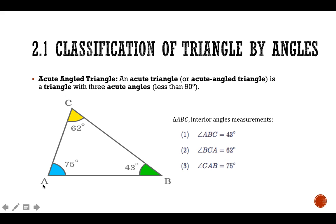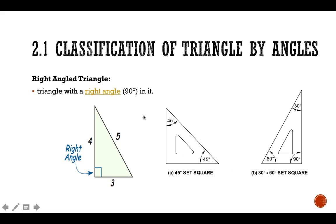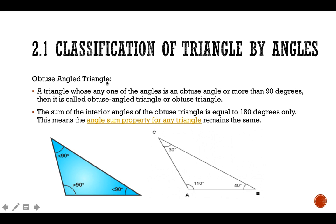For example, angle ABC measures 40 degrees, and we can write the other angles similarly. A right-angled triangle has at least one angle equal to 90 degrees — like the set square you have, where the longer one measures 90 degrees. An obtuse triangle is one where any one angle is more than 90 degrees, while the other two remain less than 90 degrees. The sum of all interior angles still equals 180 degrees.